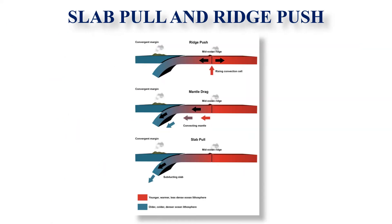Regarding slab pull and ridge push: geologists generally agree that subduction of cold, dense slabs of oceanic lithosphere is a major driving force of plate motion. This phenomenon is called slab pull. It occurs because cold slabs of oceanic lithosphere are more dense than the underlying warm asthenosphere and hence sink like a rock — they are pulled down into the mantle by gravity. These lithospheric slabs are subducting into the mantle.